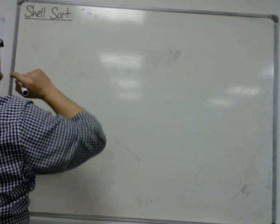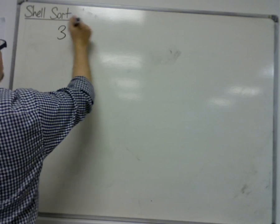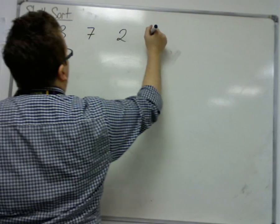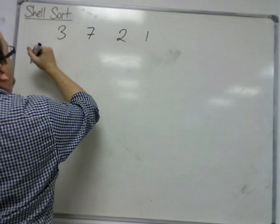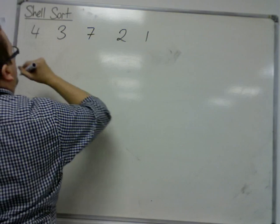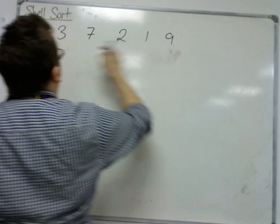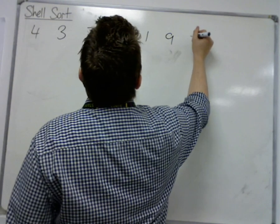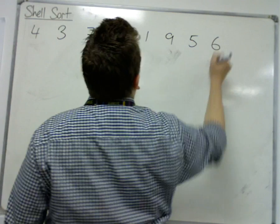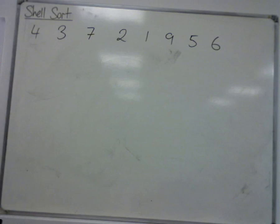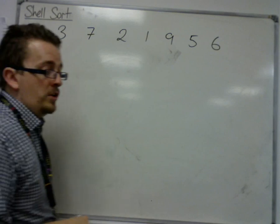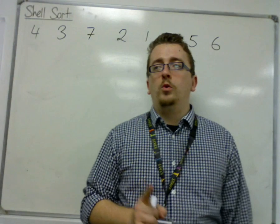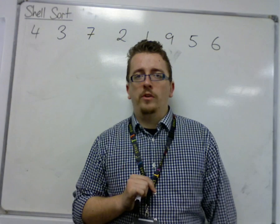So the list of numbers that we're going to work with are going to be 4, 3, 7, 2, 1, 9, 5, 6. So here are my 8 numbers and I'm going to try and put these into ascending order using a shell sort.